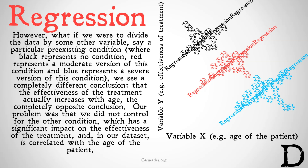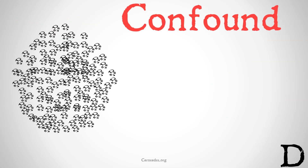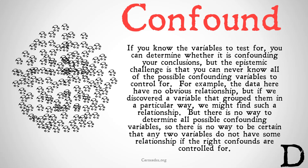Once again, we draw the opposite conclusion from a data set once we control for the confounding variables. If you know the variables to test for, you can determine whether they are confounding your conclusions. But the epistemic challenge is that you can never know all of the possible confounding variables to control for. There's no way to determine all possible confounding variables, so there's no way to be certain that any two variables do not have some relationship if the right confounds are controlled for.